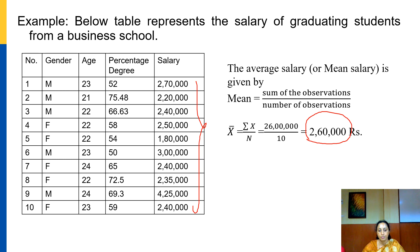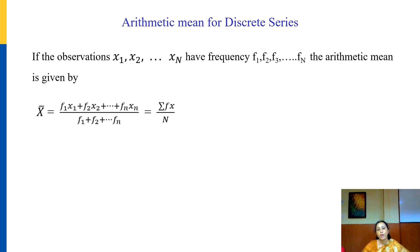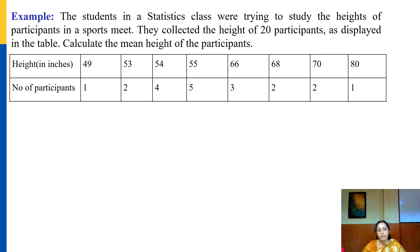Now let us see how to find the average for discrete series. If you have observations x1, x2, ..., xn repeated f1, f2, ..., fn number of times, the arithmetic mean is given by: x̄ = (f1·x1 + f2·x2 + ... + fn·xn) / total frequency, that is, x̄ = Σfx / n. This gives us the arithmetic mean for a discrete series.